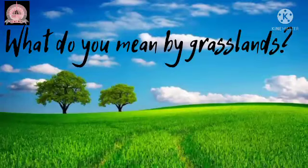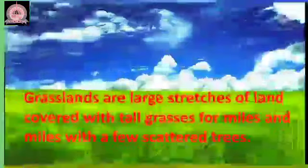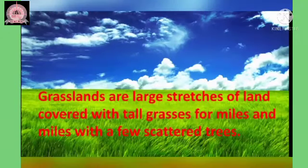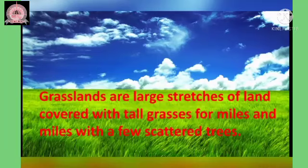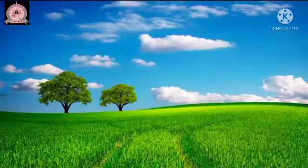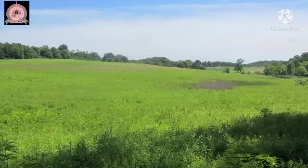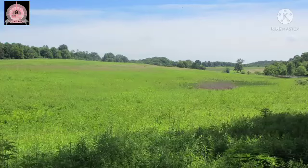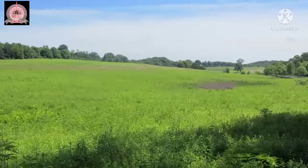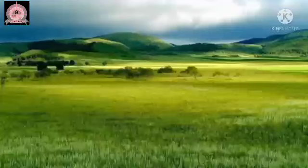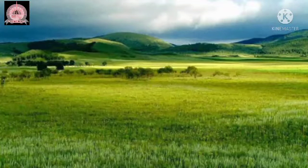Children, do you know what is meant by grasslands? Grasslands are large stretches of land covered with tall grasses for miles and miles, with a few scattered trees. They are open land spread over large areas. In a grassland, there may be hardly a few trees here and there, and the rest of the land is covered with tall grasses. The grasses found here have not been planted by people — these grasslands are natural habitats that have been formed by nature.